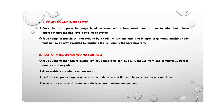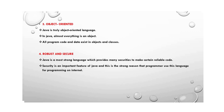This property is called platform independence. Object oriented: Java is a truly object-oriented programming language. Java has many object-oriented concepts like class, object, encapsulation, abstraction, dynamic binding, and polymorphism. In Java, almost everything is an object — a program can be divided into a number of sectors. All program code and data exist in objects and classes.